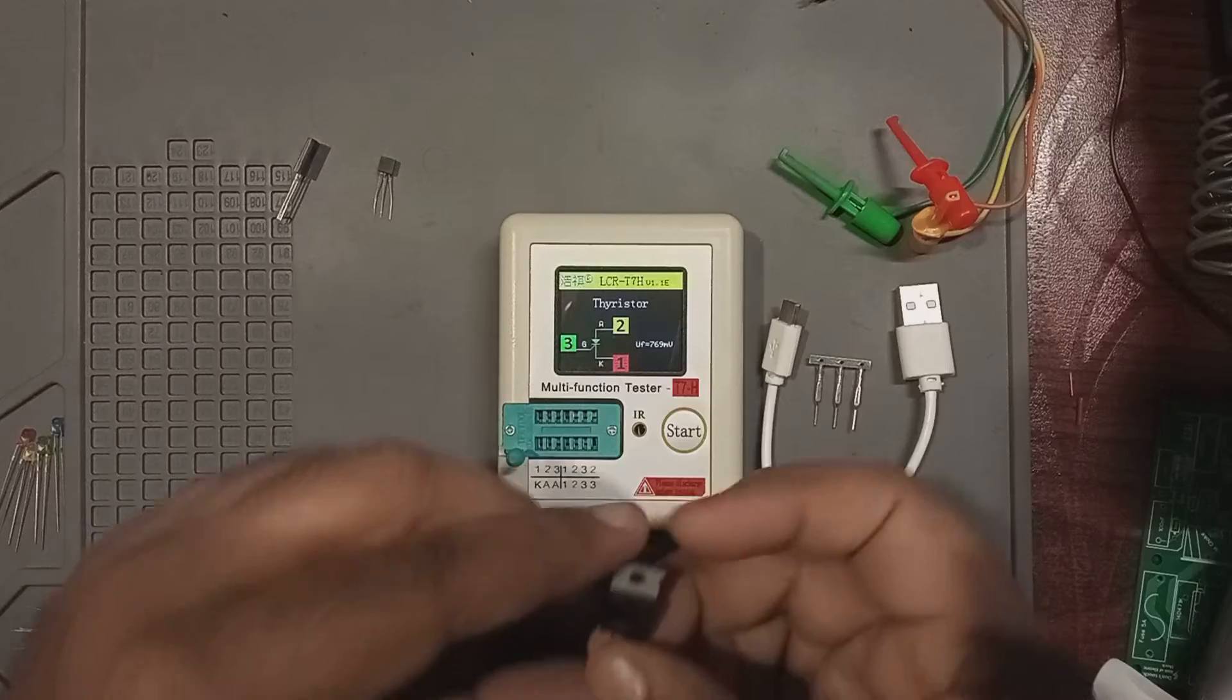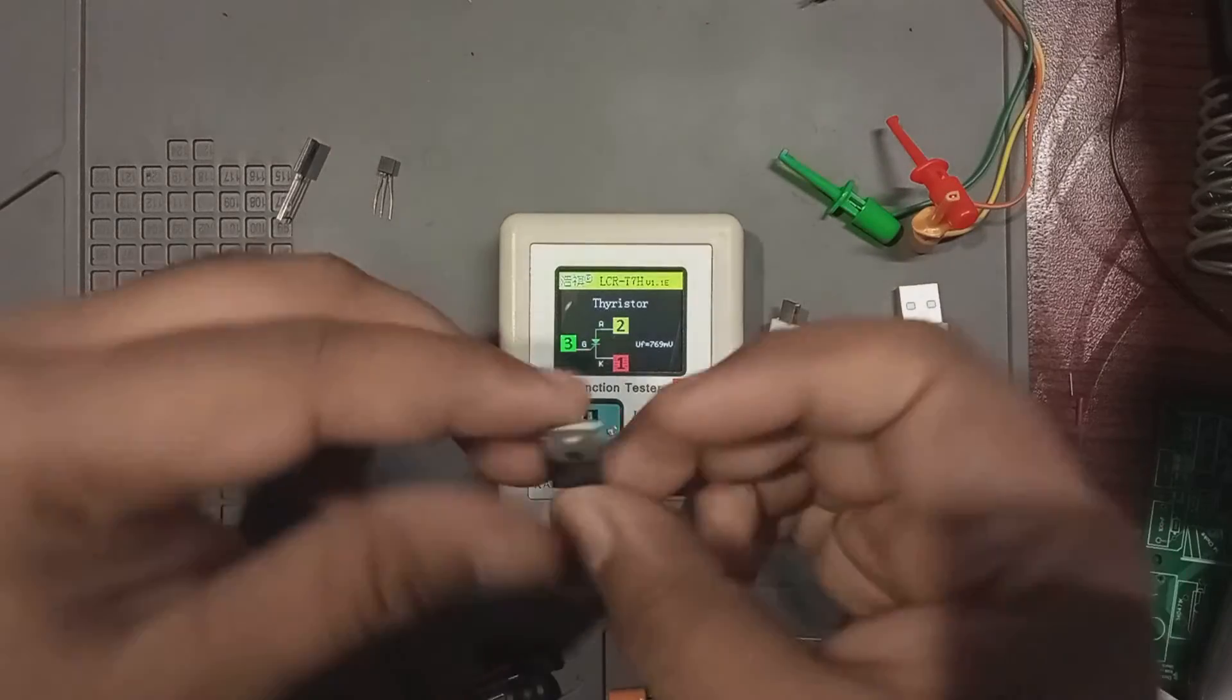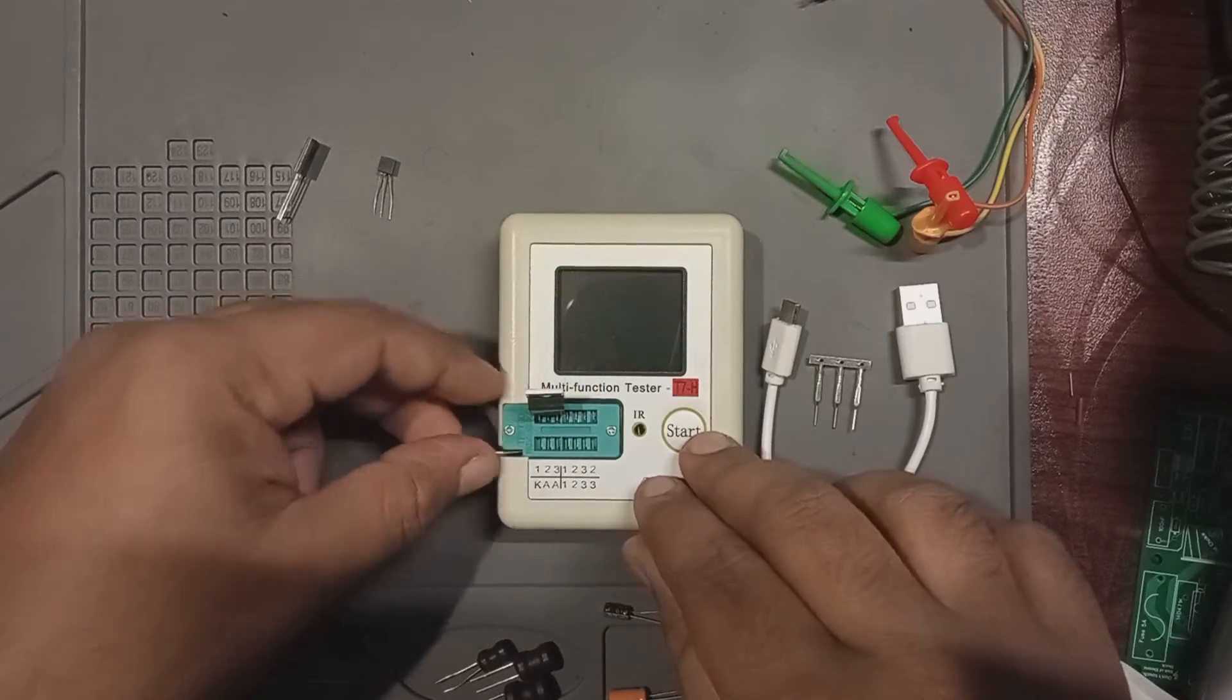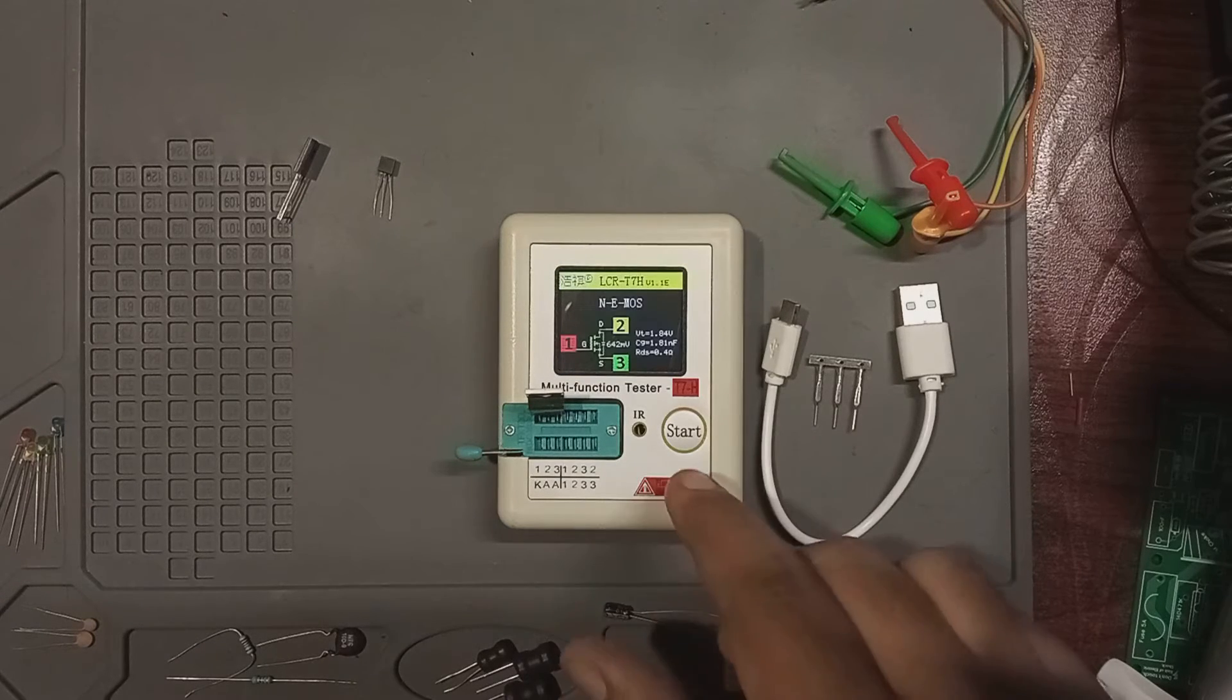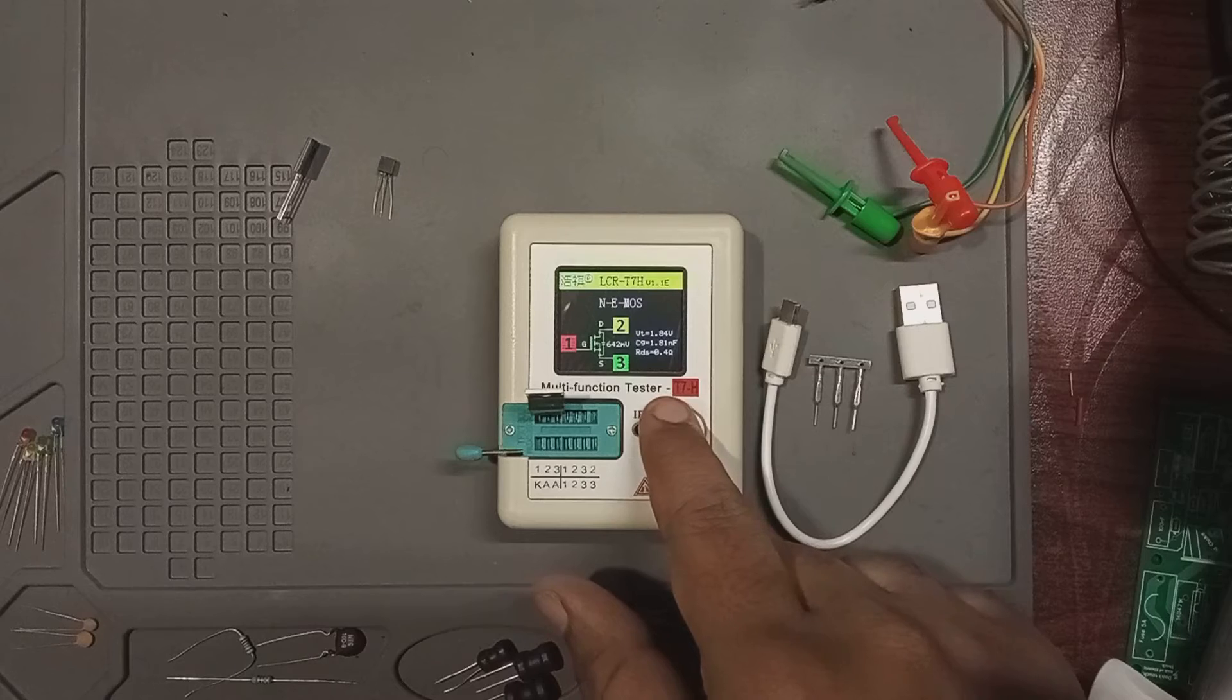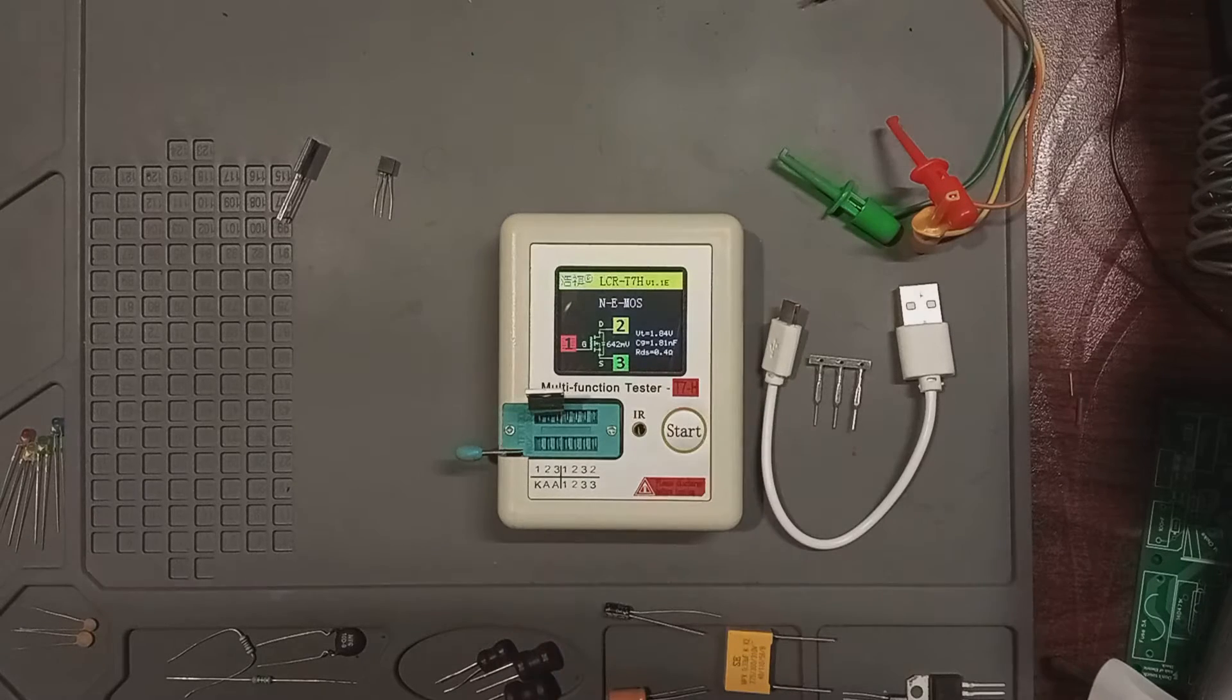Now let's test a MOSFET. I'm using an IRF3205 MOSFET. Keep in mind, it is not a logic level MOSFET. As we can see that its threshold voltage stands at 1.84 volts. This is where it begins to conduct, though it might not be fully at this point.